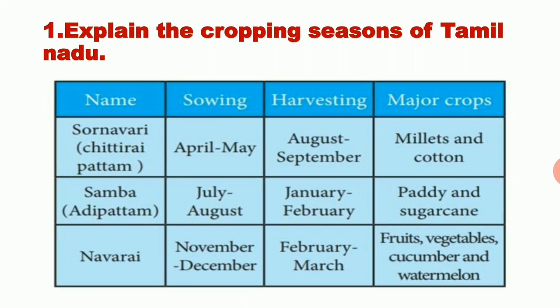The next season is Samba season. The another name of Samba is known as Adipattam. Its sowing period is July to August and harvesting season is January to February. Major crops of Samba season are paddy and sugarcane.